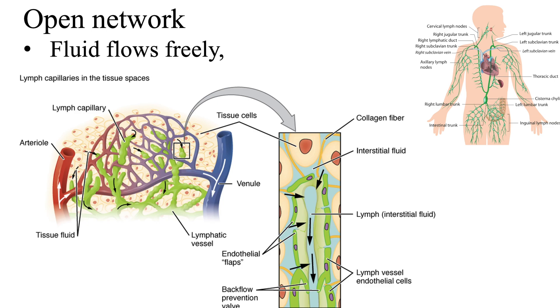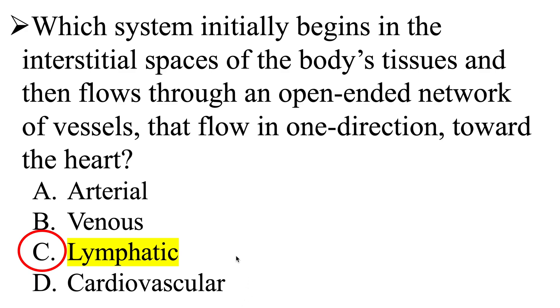An open network of vessels is when fluid flows freely in the body's tissues. For example, the lymphatic system is an open-ended network that picks up interstitial fluid. Looking at the capillary beds, you can see lymphatic capillaries shown in green. Zoomed in, you can see the label 'interstitial fluid' — the fluid between the spaces of our cells and tissues. This interstitial fluid enters the lymphatic vessels, becomes lymph, is cleansed in the lymphatic system, and then returns to the heart and cardiovascular system. So the correct answer is the lymphatic system.